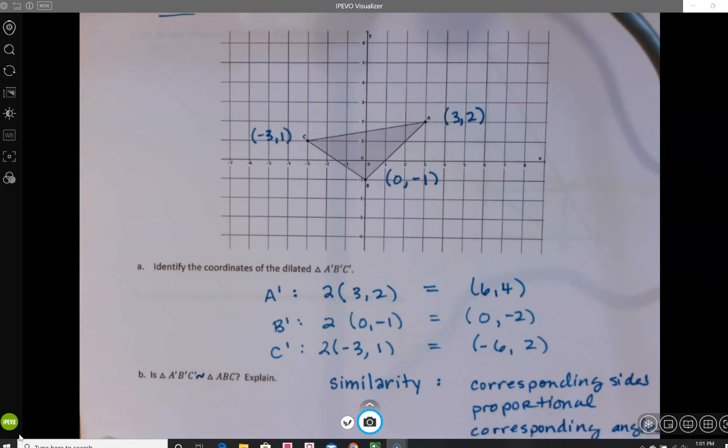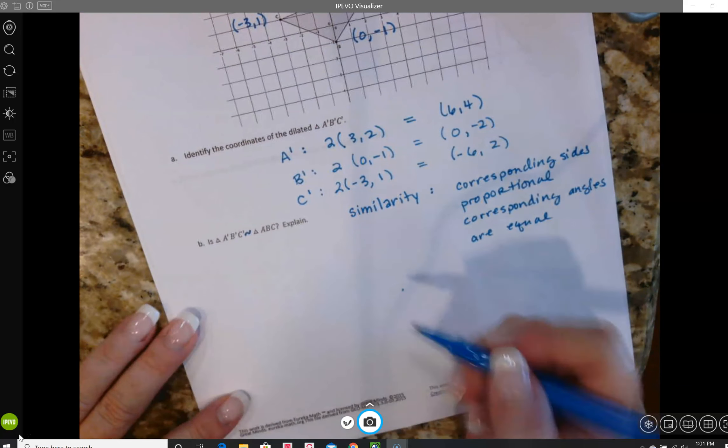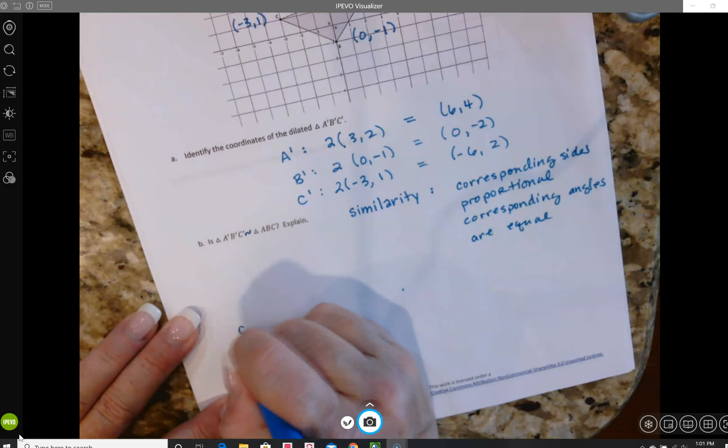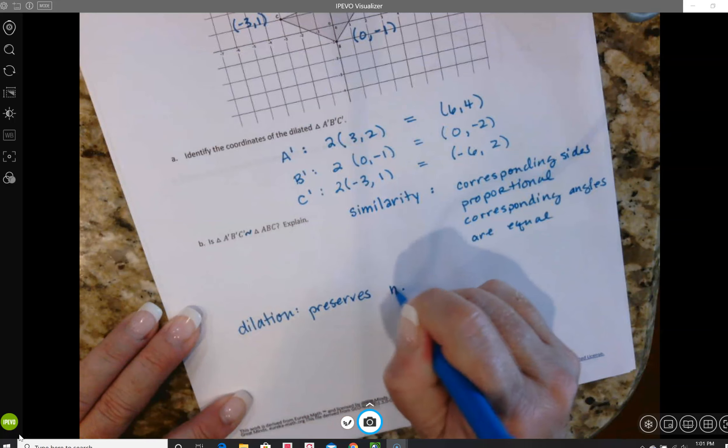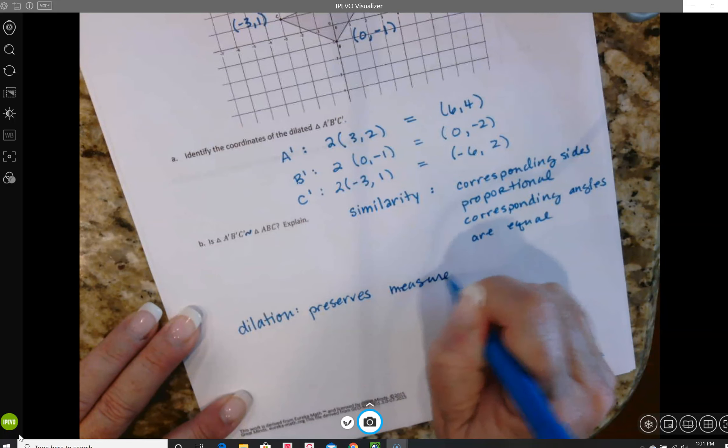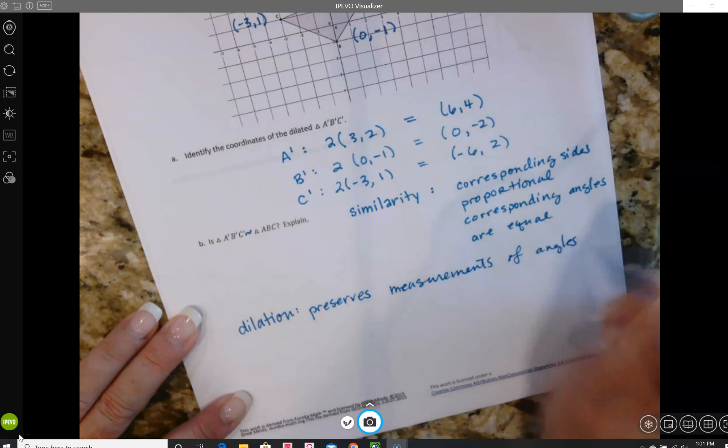The other thing we can consider is the definition of dilation. Dilation preserves measurements of angles. So we know that the dilated triangle has the same angles.